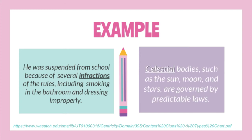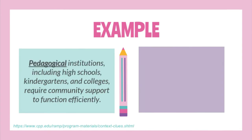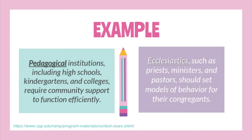'Celestial bodies such as the sun, moon, and stars are governed by predictable laws.' The examples sun, moon, and stars imply that celestial relates to outer space. Also, 'Pedagogical institutions including high schools, kindergartens, and colleges require community support to function efficiently.' From the examples given, pedagogical simply relates to teaching or education. Finally, 'Ecclesiastics such as priests, ministers, and pastors should set models of behavior for their congregants.' From the given examples, ecclesiastic relates to the Christian church or its clergy or members.